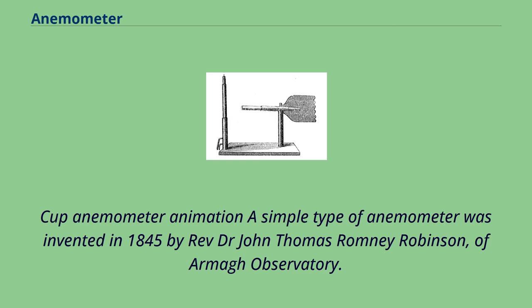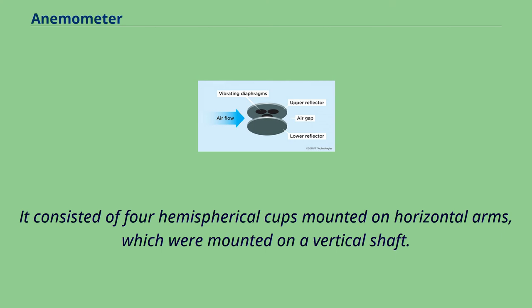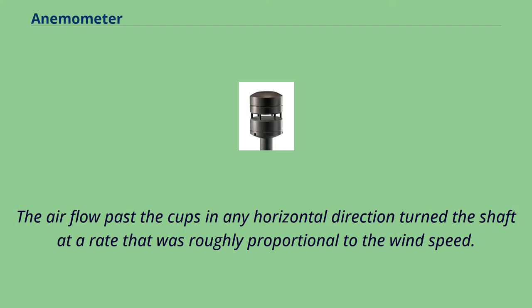A simple type of anemometer was invented in 1845 by Rev. Dr. John Thomas Romney Robinson of Armagh Observatory. It consisted of four hemispherical cups mounted on horizontal arms, which were mounted on a vertical shaft. The air flow past the cups in any horizontal direction turned the shaft at a rate that was roughly proportional to the wind speed.